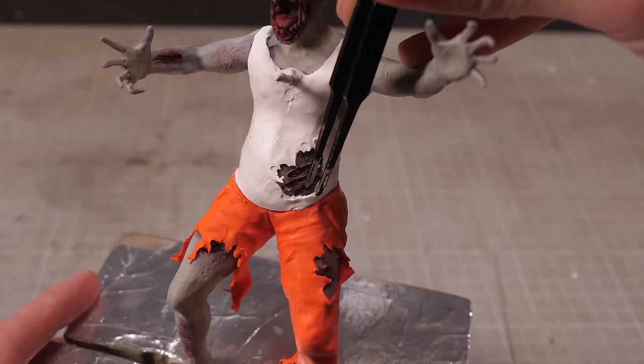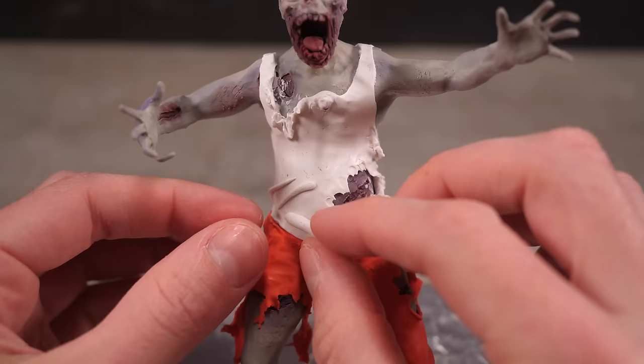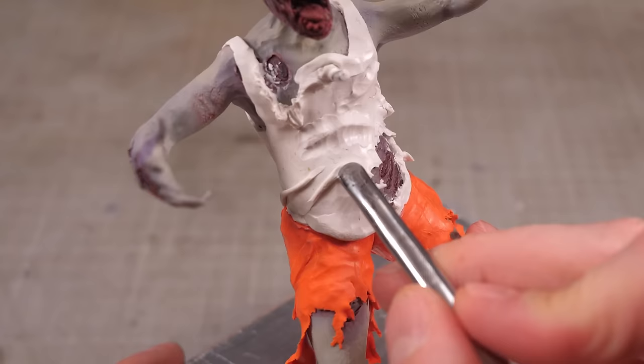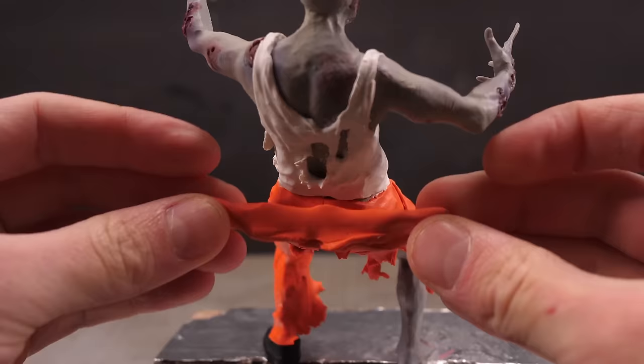Naturally I opted for a tank top since jumpsuits and tank tops are the height of fashion and once I'd wormied my way to lots of wrinkles I can get back to finishing off his overalls by adding the upper half tied around his waist.